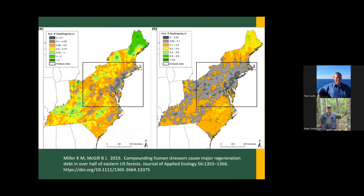More recently, Miller and McGill looked at forest inventory data across the entire northeastern United States and published reports showing what they call a regeneration debt. If you look at seedlings per square meter, it doesn't look too bad. But the real problem is when you look at saplings per square meter — almost half the state is in a very poor situation. It seems we've got seedlings at ground level, but because of deer herbivory, they're not growing to the sapling stage.